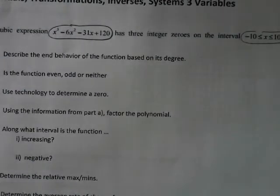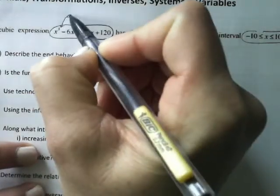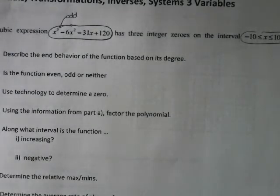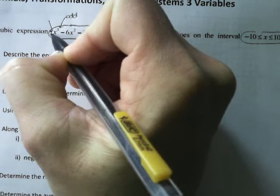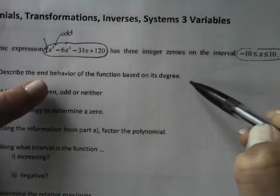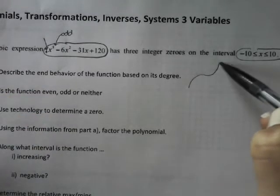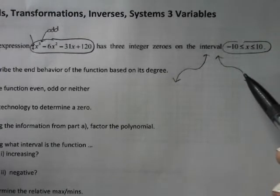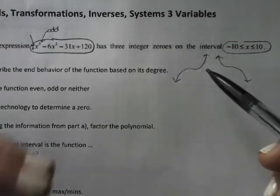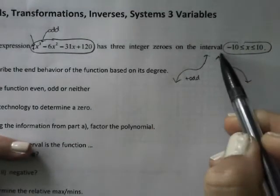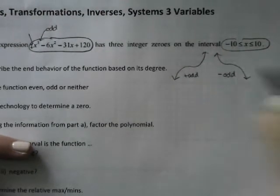First, talking about end behavior: even and odd functions. This is an odd degree because it has a degree of three. End behavior is all based on odd, and the leading coefficient here is positive. With odd end behavior, the ends are opposite of each other — start low and end high, or start high and end low. The overall slope increasing makes this a positive odd; a decreasing overall slope would make it a negative odd degree polynomial.